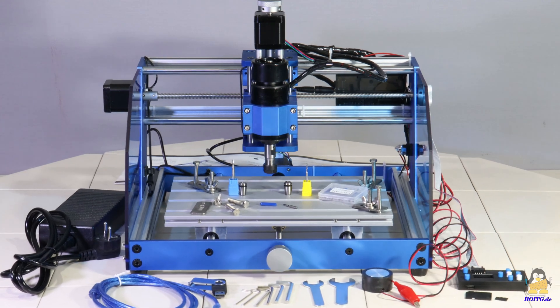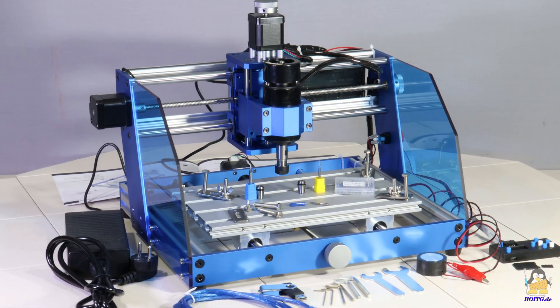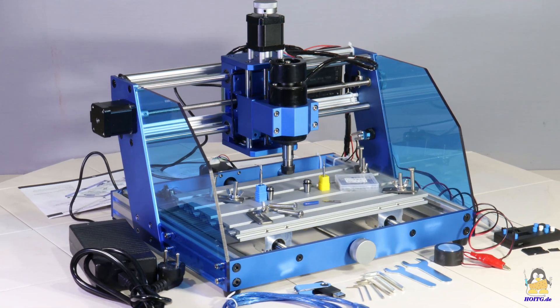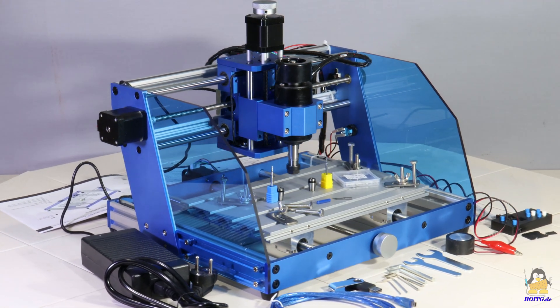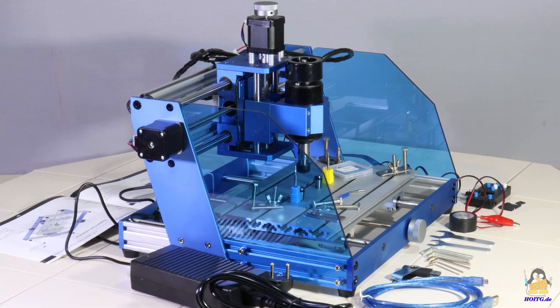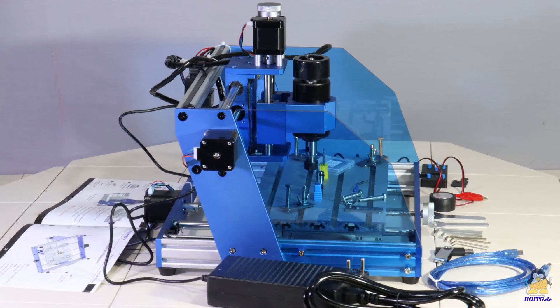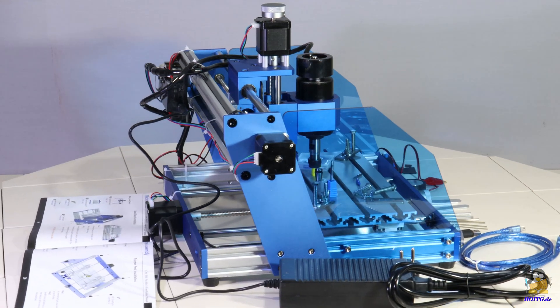The assembly instructions are on the USB stick and on a printed manual. Screws with wing nuts and metal plates are used to clamp the work pieces on the milling table. Data can be transferred directly from a PC using the included USB cable. The power supply delivers an output voltage of 24V at up to 10A.